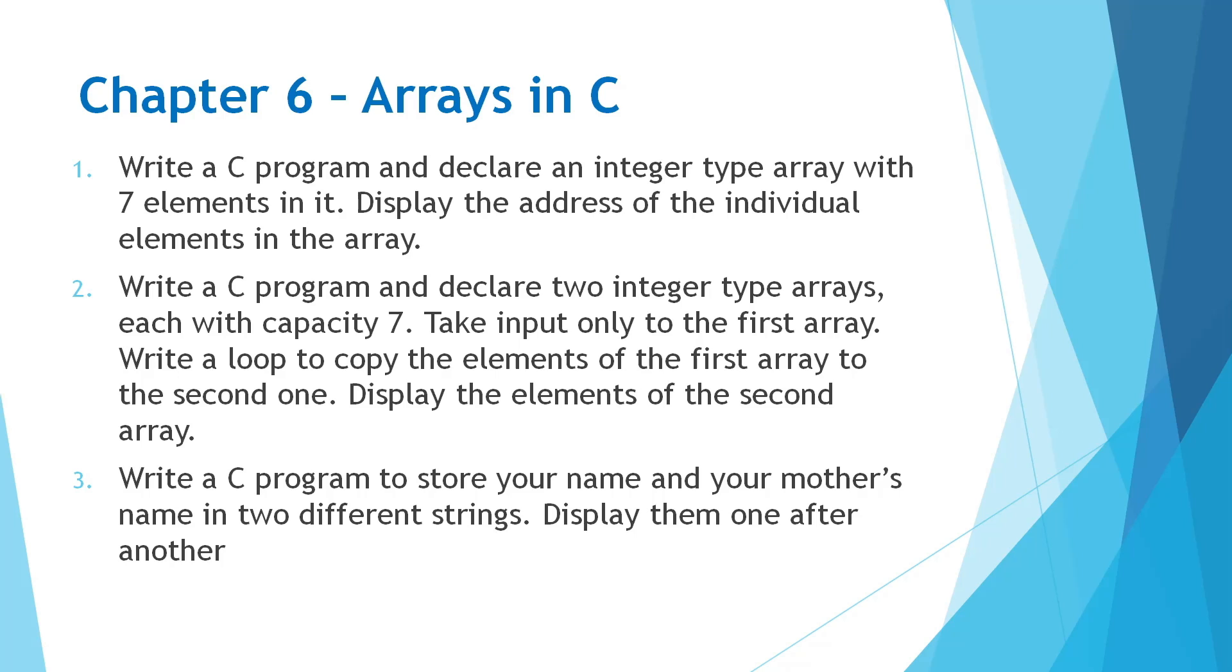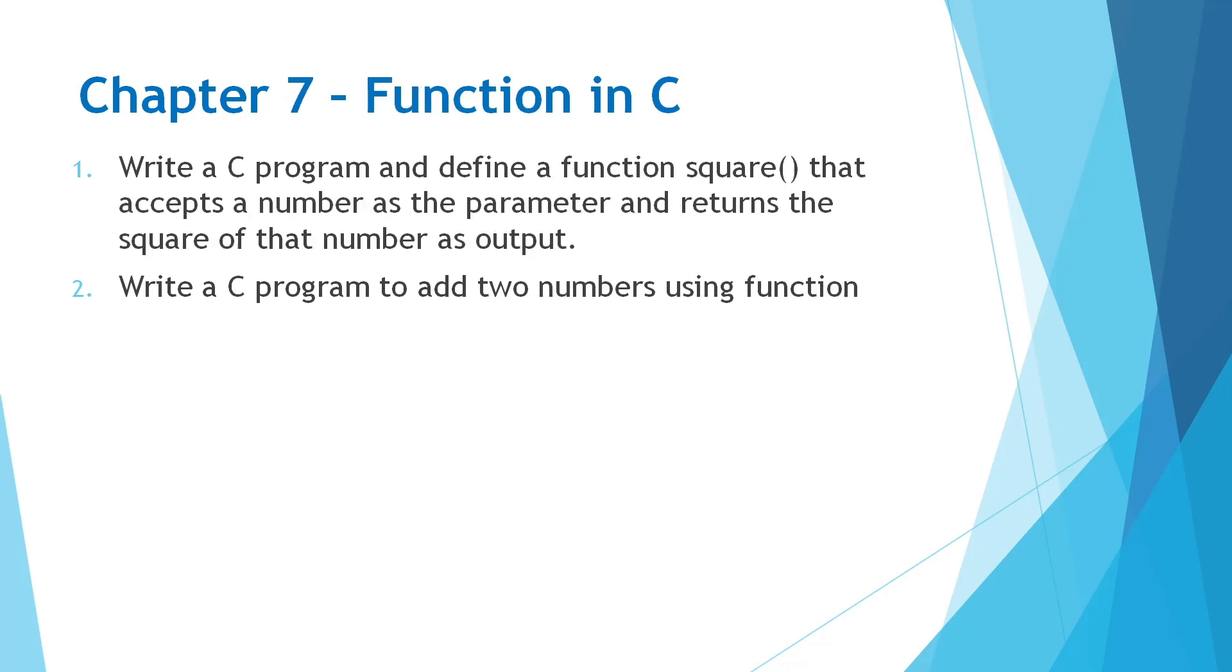From Functions, you can skip this chapter if you didn't understand it properly, or you can see these two questions. I think these two are the only important questions for practical examination. Write a C program to define a function square that accepts a number as parameter and returns the square of that number. And write a C program to add two numbers using function. Whatever questions I have added here are also important for your theory examination, so you can practice these questions for both practical as well as your theory examination.